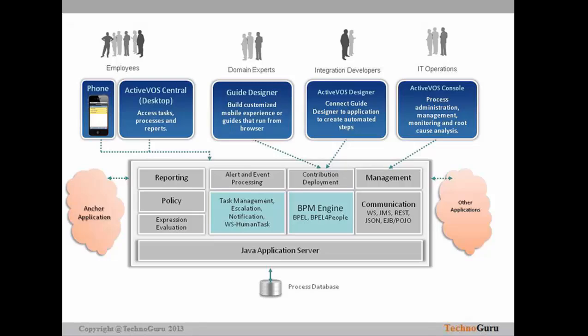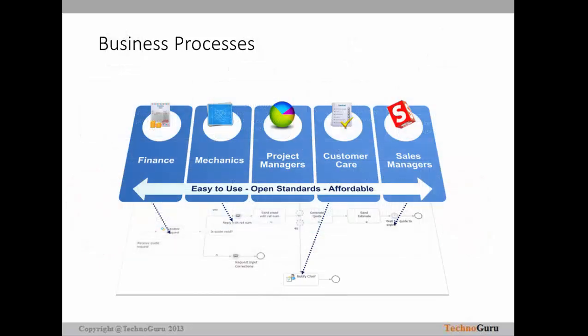Whenever you install Active OS with your Informatica tool, you have to separately create the Active OS schema. That Active OS schema is the repository where all the data and metadata you refer to in Active OS will be stored. The business processes that can be managed include finance, mechanics, project managers, customer care, sales managers, and this list is continuously growing. All this process management can be achieved through Active OS. It is not necessary to always use the Informatica tool with Active OS, but as part of the MDM installation nowadays, Active OS is one of the components to install.